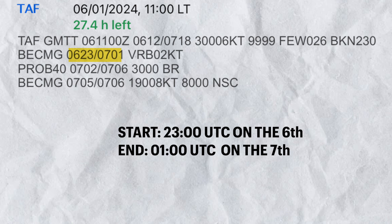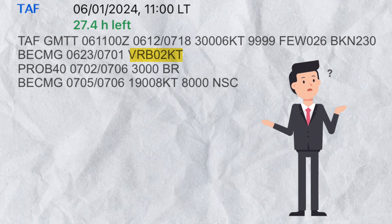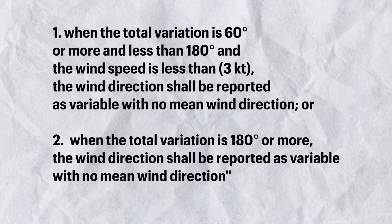What kind of gradual change are we talking about? It's a wind change — it will change to variable at 2 knots. Variable wind can mean one of two things: one, when the total variation is 60 degrees or more and less than 180 degrees and the wind speed is less than 3 knots, the wind direction shall be reported as variable with no mean wind direction; or two, when the total variation is 180 degrees or more, the wind direction shall also be reported as variable with no mean wind direction.